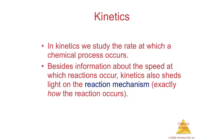Section 14.1, factors that affect reaction rates. In this chapter, we're going to study a branch of chemistry called kinetics. Kinetics has to do with how fast — which is the rate — at which a chemical reaction occurs.